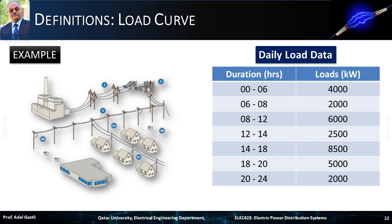Let's consider an example of a distribution system with a given load data for a given day as shown in this table. The load demand is 4,000 kW from midnight to 6 a.m., 2,000 kW from 6 to 8 a.m., 6,000 kW from 8 a.m. to noon, 2,500 kW from noon to 2 p.m., 7,500 kW from 2 to 6 p.m., 5,000 kW from 6 to 8 p.m., and 2,500 kW from 8 p.m. to midnight.